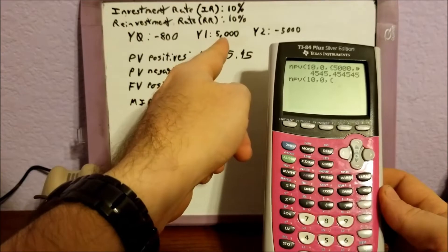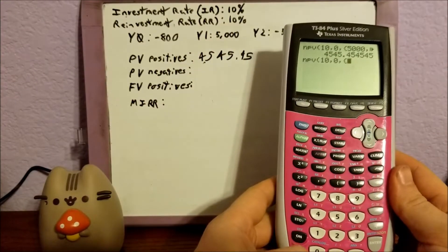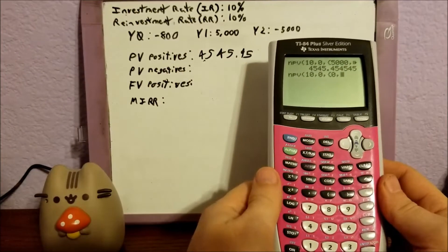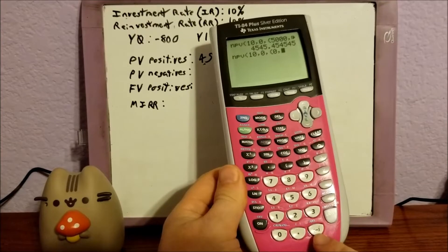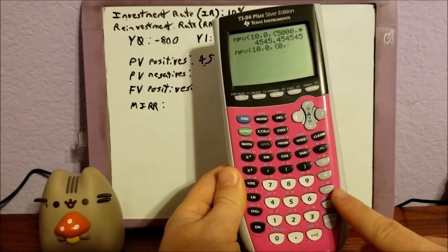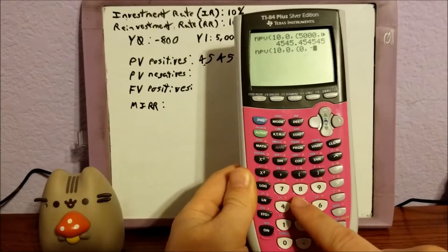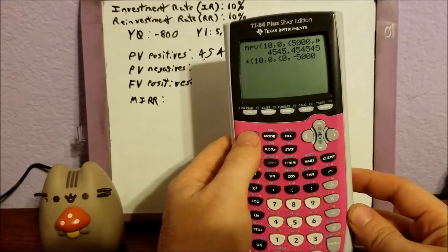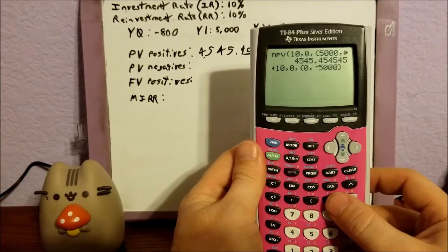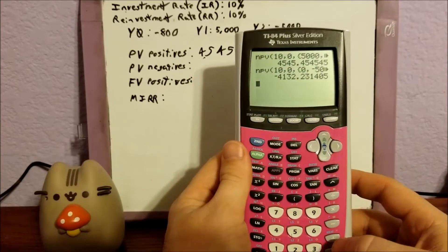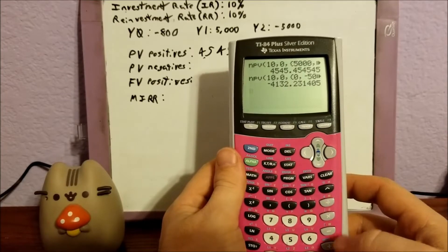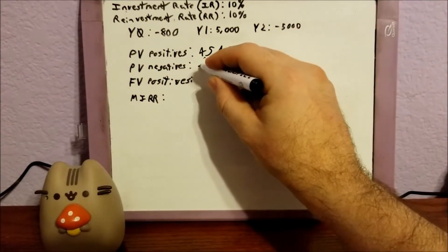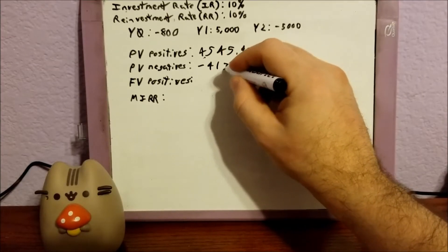We move to year one — that's a positive, so since we're doing negatives, we ignore it and enter zero, comma. Year two is a negative, so we put that in using the negative button at the bottom — not the subtract button — so negative 5,000. We close curly braces and parentheses, and we end up with negative 4,132.23.